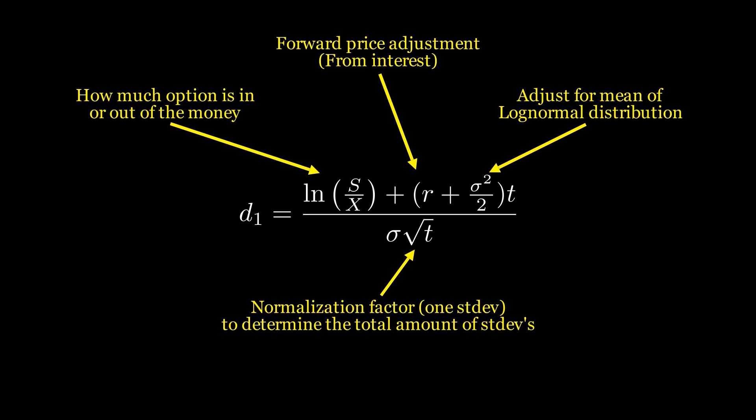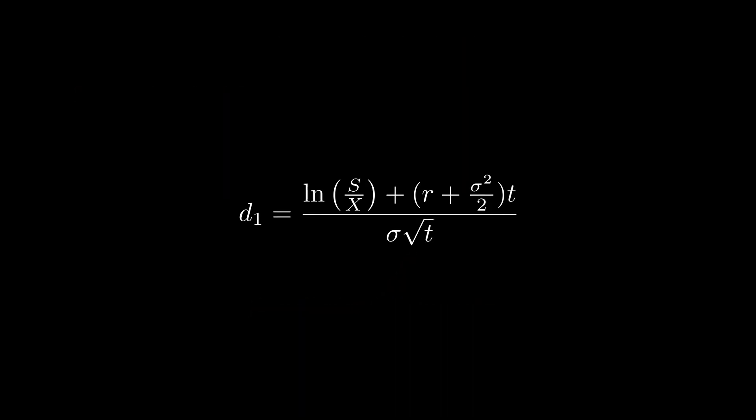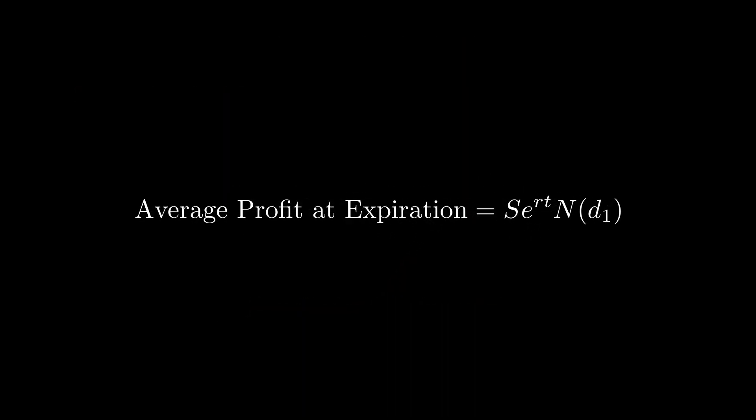Essentially, D1 tells us how many standard deviations the strike price is from the mean. The equation might look complicated, but it's really just a way to adjust the stock and strike prices so that we can use a cumulative normal distribution to calculate probabilities. Combining this with the forward price of the stock gives us the expected average profit of the option at expiration.